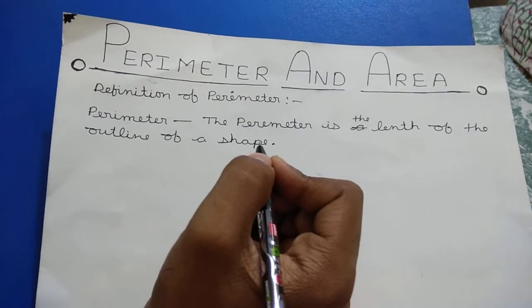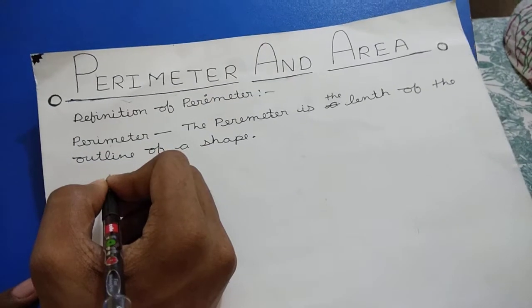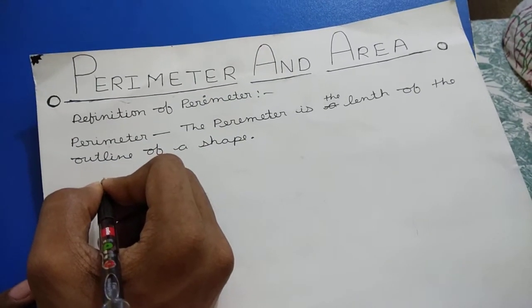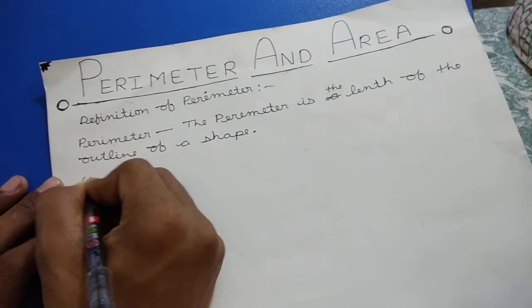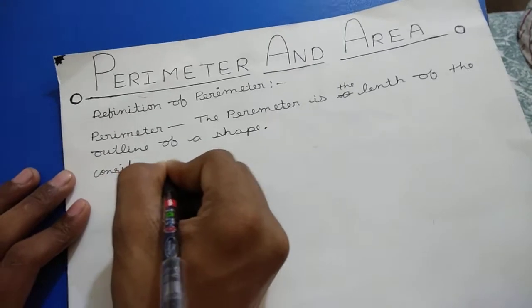Now consider a rectangle whose length is 5 cm and the breadth is 4 cm.